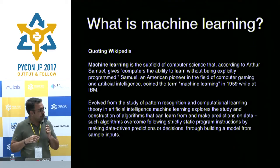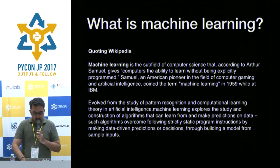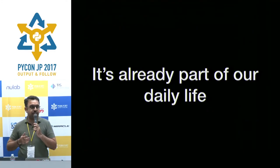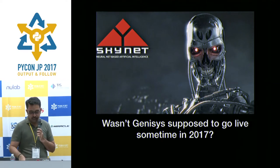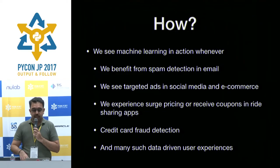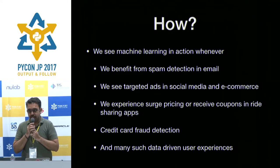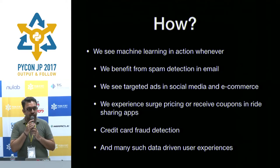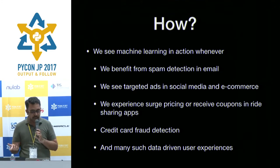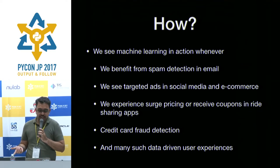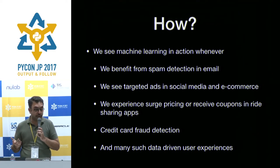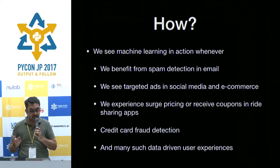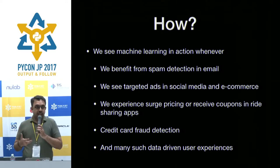You provide some information into a computer and it learns from there. It's already part of our life. We have spam detection in email — that's machine learning. A computer algorithm looks at your email, figures out what mails you're reading and not reading, and filters spam. We see ads on e-commerce websites, experience surge pricing on Uber, and get fraud alerts from our bank when a card is used outside our normal country.